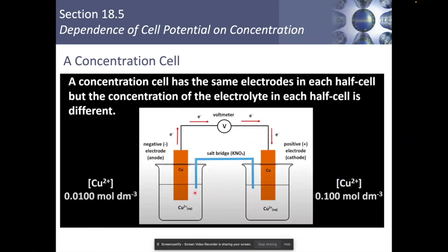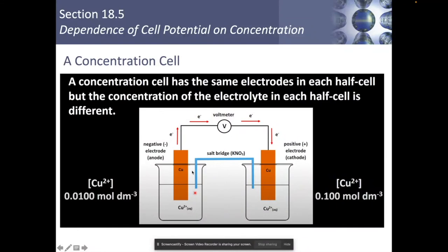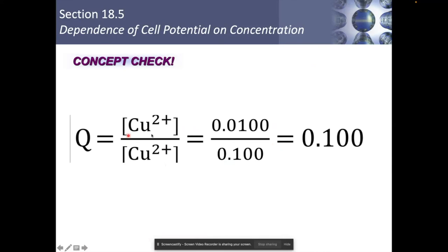A concentration cell — not necessarily on the AP exam, but interesting — is where you have the exact same metal on both sides. You'd expect nothing to happen since they're the same metal, but the concentrations differ. For example, Cu²⁺ at 0.01 M on one side and 0.1 M on the other. Electrons move from the lower concentration to the higher concentration side. The reaction quotient Q equals the anode concentration divided by the cathode concentration. This happens a lot with electroplating, like plating silver.